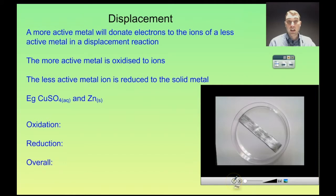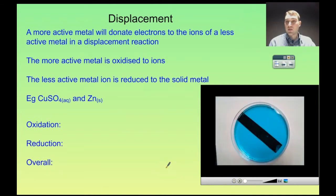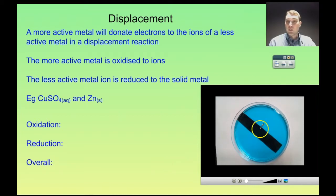So down here I have a strip of zinc that we had to clean, and we're putting it in a copper solution. This is sped up. So as soon as the copper solution — this is copper sulfate — is added, we can see that the zinc turns dark. And that darkness over time changes to a red color. Also, as the reaction is going on, have a look at the color of the blue of the solution and see if that changes.